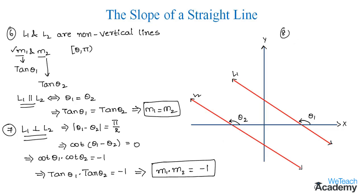Note the formula: if a non-vertical line passes through the points (x1, y1) and (x2, y2), then its slope m is given by m = (y2 − y1) / (x2 − x1).